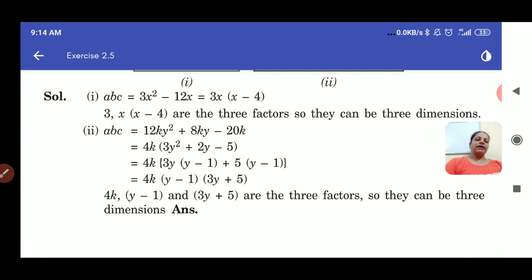Now 3y² plus 2y minus 5 we again factorize by splitting the middle term. One factor already is 4k which is outside. So that means we get three factors as 4k, y minus 1, and 3y plus 5. So these are the three factors and we can say that these are the three dimensions of your cuboid.